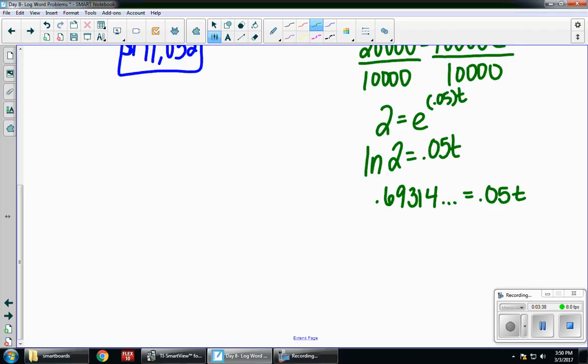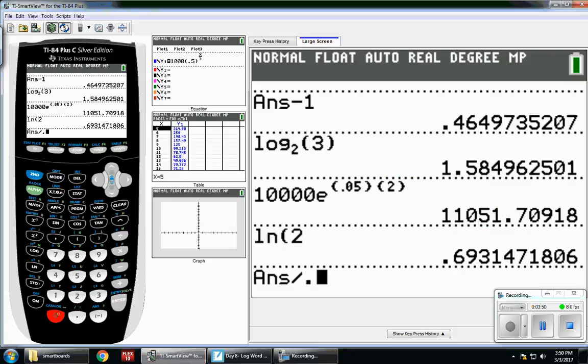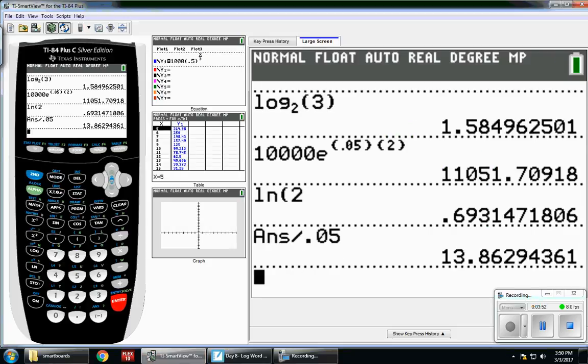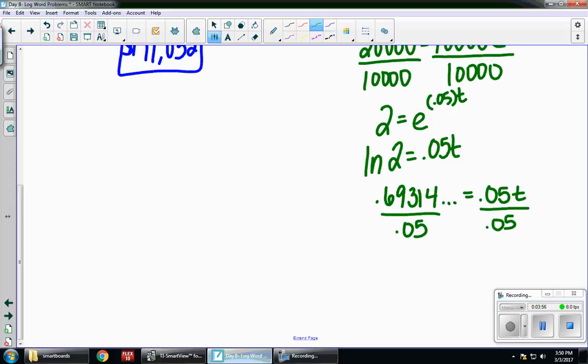So now what I'm going to do is I want to isolate the T. So I'm going to divide both sides by 0.05. So I get T equals 13.862. And they wanted it to the nearest year. So that means I'm going to round up to 14 years.